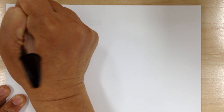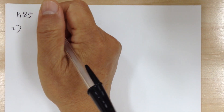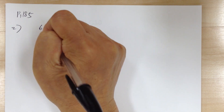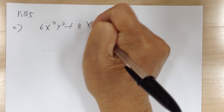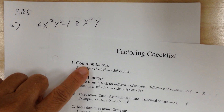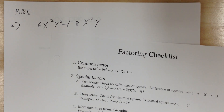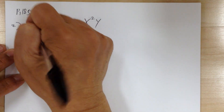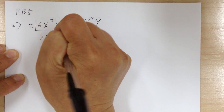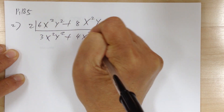Let's go to page 185 and start with number 2. You'll have 6x²y² plus 8x²y. When you're doing the factoring, you go through the checklist. Step 1: common factor. You can factor out 2 from 6 and 8. So you get 2 times 3x²y² plus 4x²y.